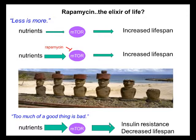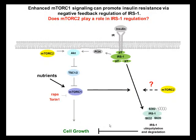Rapamycin can mimic starvation conditions or caloric restriction by inhibiting mTOR. Thus, less mTOR signaling is actually beneficial for increased lifespan. On the other hand, in the presence of too many nutrients, mTOR signaling is enhanced or becomes unrestrained. This condition can lead to several diseases, including insulin resistance, diabetes, obesity, even cancer, and eventually decreases lifespan.